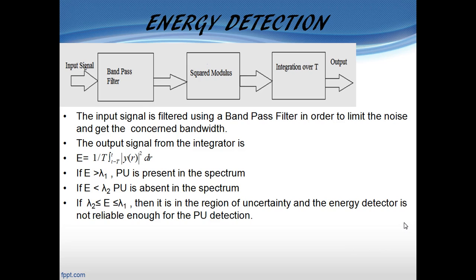These are the consecutive steps used for the energy detection method in the project. The input signal is filtered using a bandpass filter in order to limit the noise and get the concerned bandwidth. The output E from the integrator is then compared to two threshold values λ1 and λ2 in order to determine if the signal is present or not. The energy output from the integrator can be represented by the equation given in the slide.